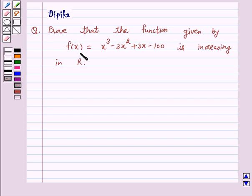Prove that the function given by f(x) = x³ - 3x² + 3x - 100 is increasing in R. So let's start the solution.